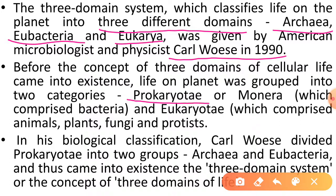Pehli category thi Prokaryota ya Monera, jiske andar Bacteria ko rakha gaya, aur doosri category thi Eukaryota, jiske andar Animals, Plants, Fungi aur Protista ko rakha gaya. Yeh Five Kingdom System tha, jisme Monera pehla kingdom, Protista doosra, Fungi teesra, Plantae chautha, aur Animalia paanchwa kingdom tha.